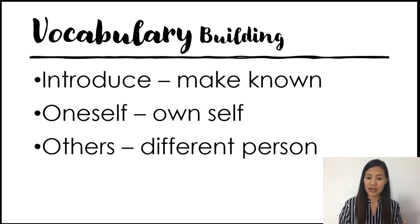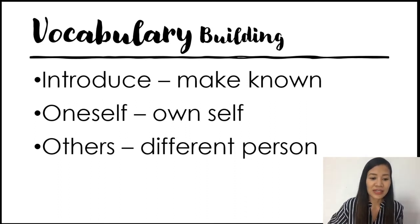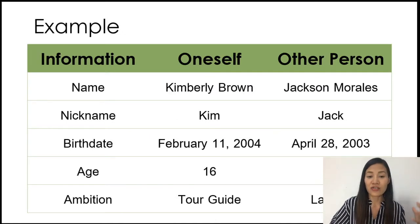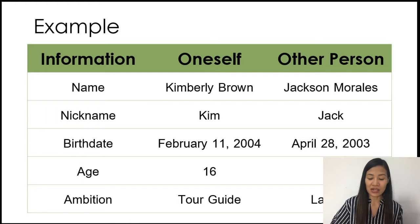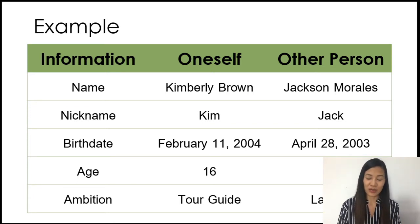So for our vocabulary building, we have the word 'introduce' which means make known, the second is 'oneself' meaning own self, and the last word is 'others' meaning different people. Next I'm going to give you examples. First we will have information. In my example earlier, I talked about my name, my nickname, my country, and my profession.